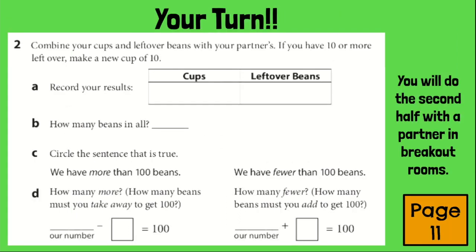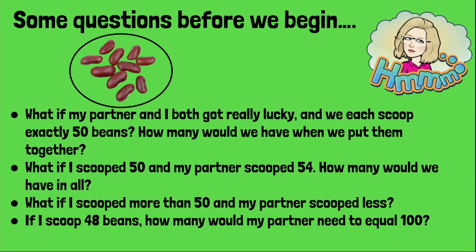Now it's your turn. You are going to work with your partner in a breakout room, and each of you will scoop and count. Then you're going to combine your cups and leftover beans together. Some questions before we begin: first, count out 10 beans in a cup — this will help you get an idea of what 50 will look like. What if my partner and I both get really lucky and we each scoop exactly 50 beans? How many would we have if we put them together? What if I scooped 50 and my partner scooped 54 — how many would we have in all? What if I scooped more than 50 and my partner scooped less? If I scooped 48 beans, how many would my partner need to equal 100?